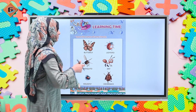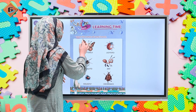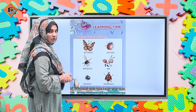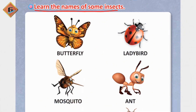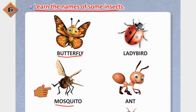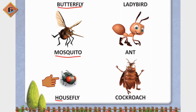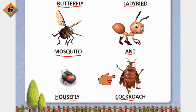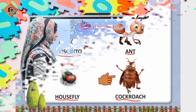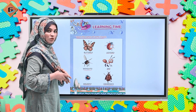Okay, this is page number 80 and we have learning time — learn the names of some insects. Wow, this is also very interesting! In the first page we learned bird names, and here we learn some insect names. The insects are: butterfly, mosquito, housefly, ladybird, ant, and cockroach. Why do we call them insects? Because they have many legs — mostly insects have many legs.